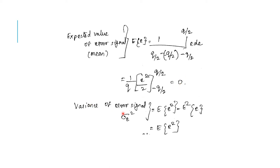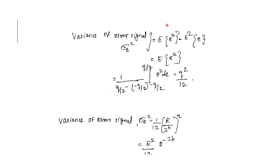The variance of the error signal is sigma E squared equals E[E²] minus (E[E])². The formula for E[E²] is 1 divided by (Q/2 minus (−Q/2)) times the integral from minus Q/2 to Q/2 of E squared dE. Integrating and simplifying, the result is Q squared divided by 12.